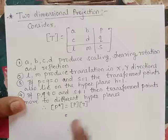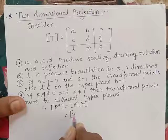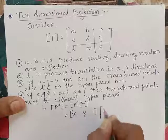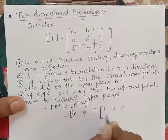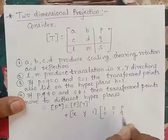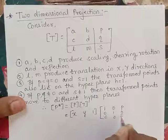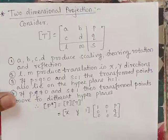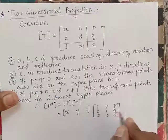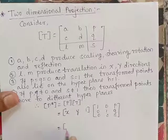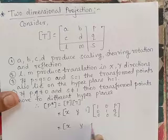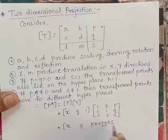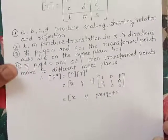P* equals P into T, where P is [X, Y, 1] and T is the matrix [1, 0, P; 0, 1, Q; 0, 0, S]. That gives [X, Y, PX + QY + S].